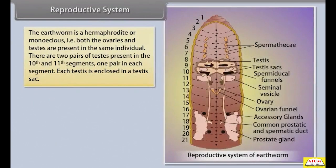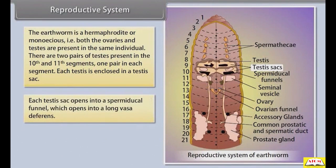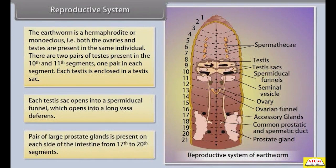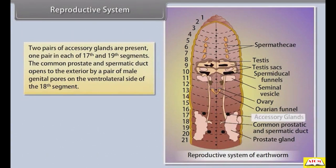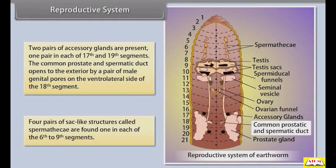The earthworm is a hermaphrodite or monoecious — that is, both ovaries and testes are present in the same individual. There are two pairs of testes in the 10th and 11th segments. Each testis is enclosed in a testis sac, which opens into a spermiducal funnel leading into vasa deferens. A pair of large prostate glands is present on each side of the intestine from the 17th to 20th segments. Two pairs of accessory glands are present, one pair each in the 17th and 19th segments. The common prostate and spermatic duct opens to the exterior by a pair of male genital pores on the ventrolateral side of the 18th segment.